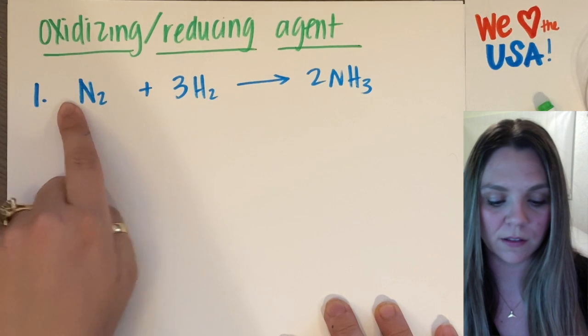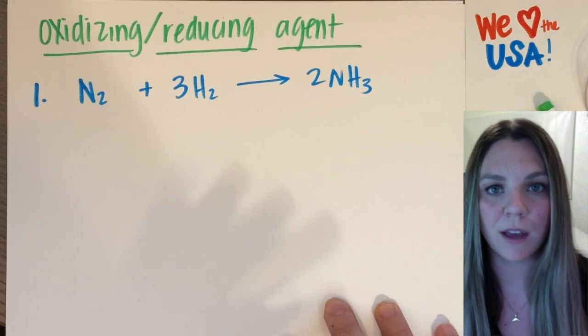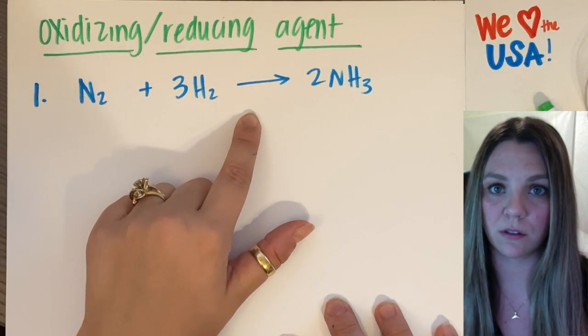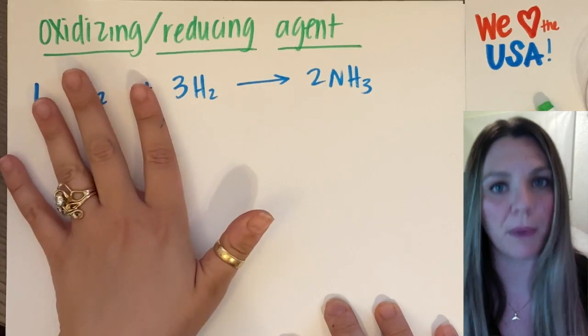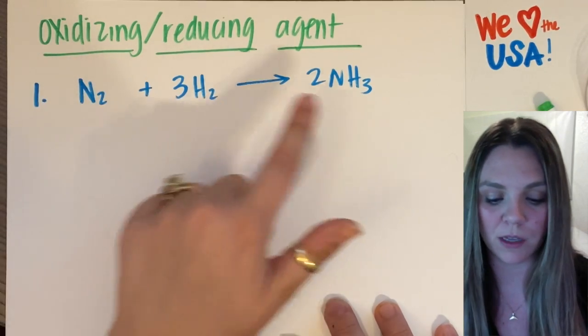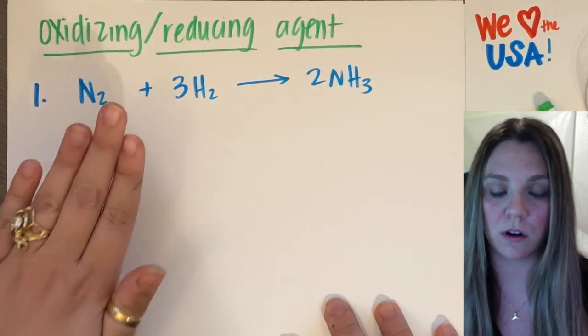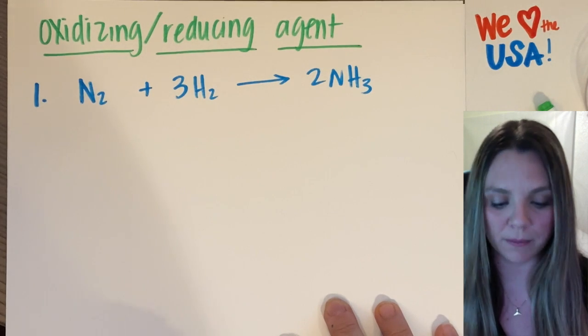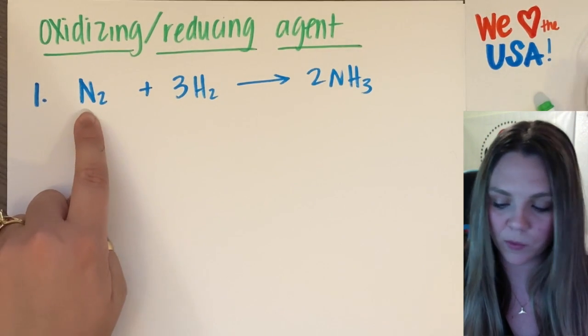Before I forget, your coefficients don't have anything to do with your oxidation numbers. So balanced equation or not balanced equation, it doesn't matter, you should still be able to get your correct oxidation numbers. Here we go, practice problem number one.